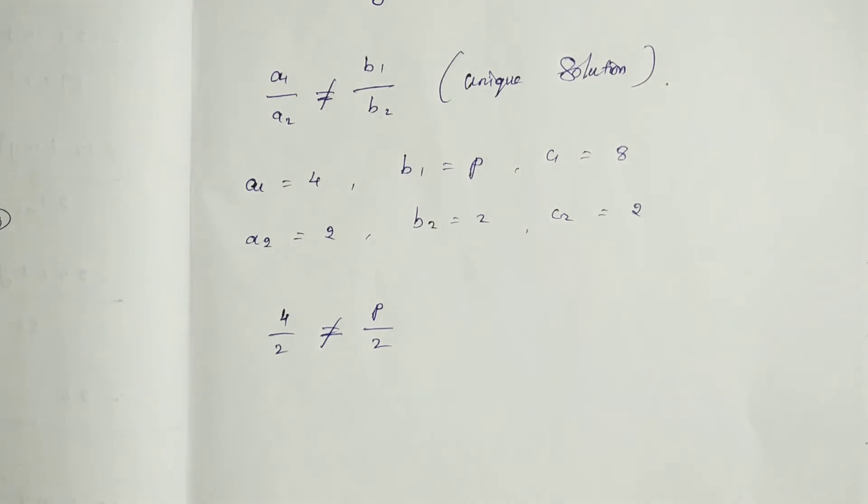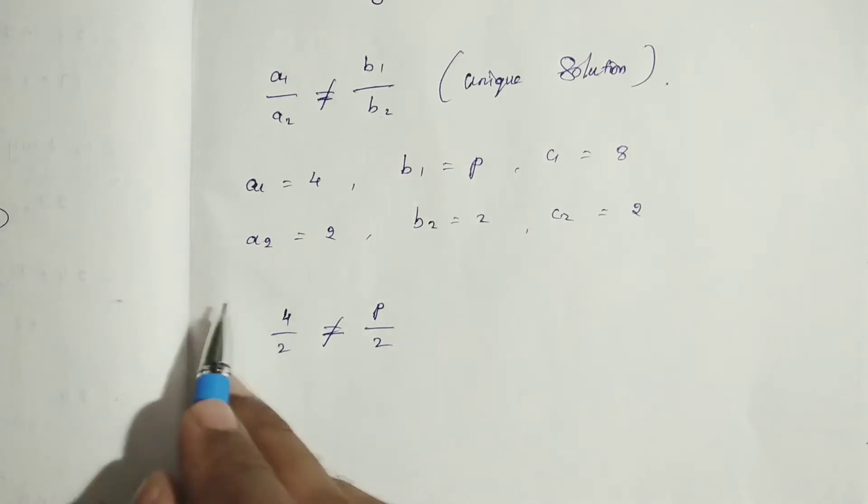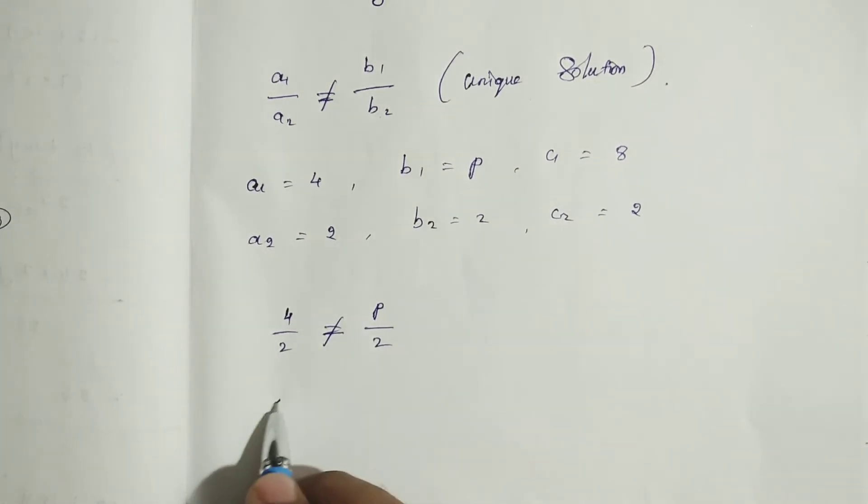It is a very easiest problem. So next, as usual, what we can do? Do the cross multiplication. So p into 2, 2p not equal to 2, p not equal to 4 into 2.